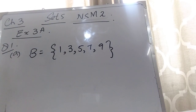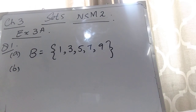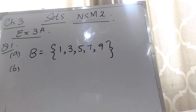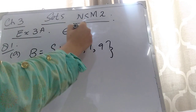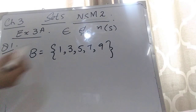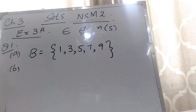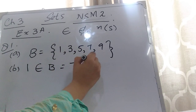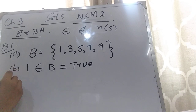In part B they are saying: state whether each of the following statements is true or false. Statement 1: 1 is an element of B. Here you can see that 1 is present in this set. I have uploaded a video explaining the concept of 'element of' and 'not element of'. You can watch that video to get this concept. Since 1 is present in set B, this statement is true.